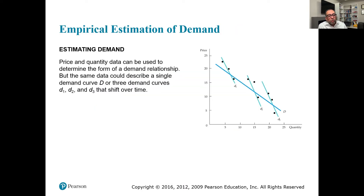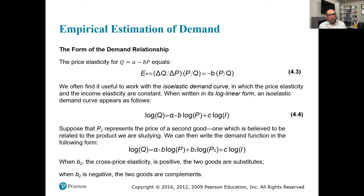Price elasticity and demand can be used to determine the form of a demand relationship. The same data could describe a single demand curve D, or three different demand curves D1, D2, D3 that shift over time. For the equation Q = a − bP, price elasticity is (ΔQ/ΔP) × (P/Q), which equals −b × (P/Q). The term −b represents the slope portion of the elasticity calculation.